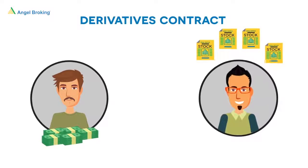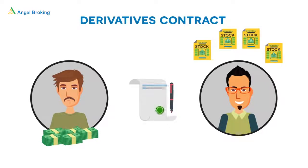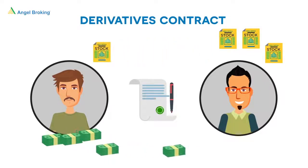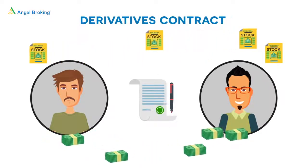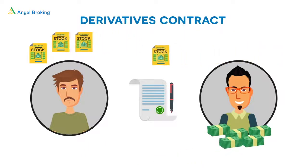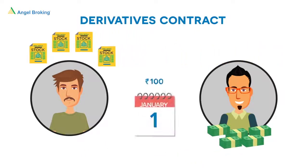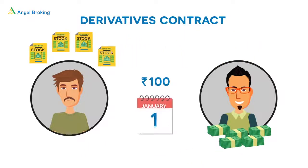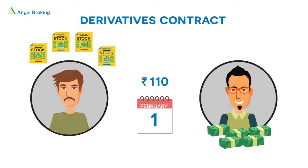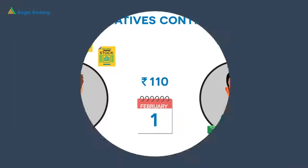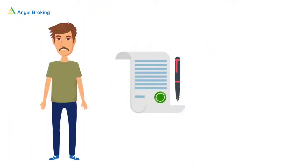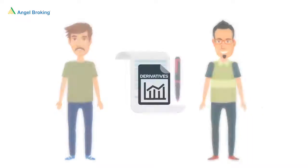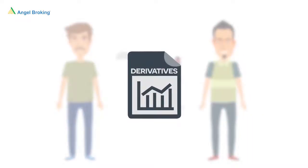So, Rajat and Ahmed enter into a contract by which Rajat has to buy and Ahmed has to sell the Zen Infra shares at an agreed price of, say, Rs 110 after 30 days, irrespective of the market price. The contract between Rajat and Ahmed is a derivative.